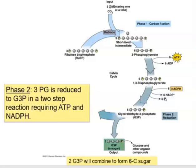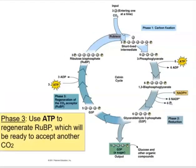Most G3P molecules are retained within the cycle to regenerate RuBP — that's the third phase, which also requires ATP. The detailed chemical reactions involved are beyond the scope of this class. RuBP is regenerated so the cycle can incorporate another CO₂ coming in. The cycle runs six times total, because one CO₂ is incorporated at a time and six are needed to produce one glucose.